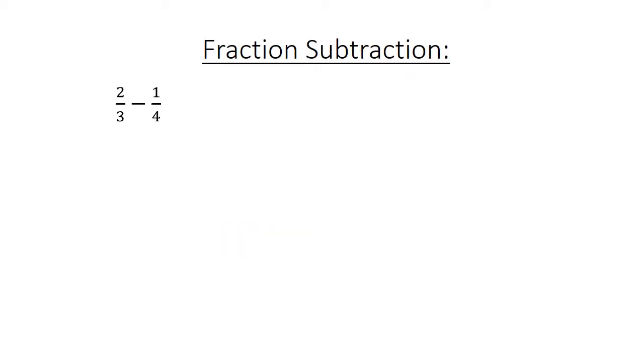Fraction subtraction. 2 over 3 minus 1 over 4. Find the lowest common multiple. 8 over 12 minus 3 over 12 equals 5 over 12.